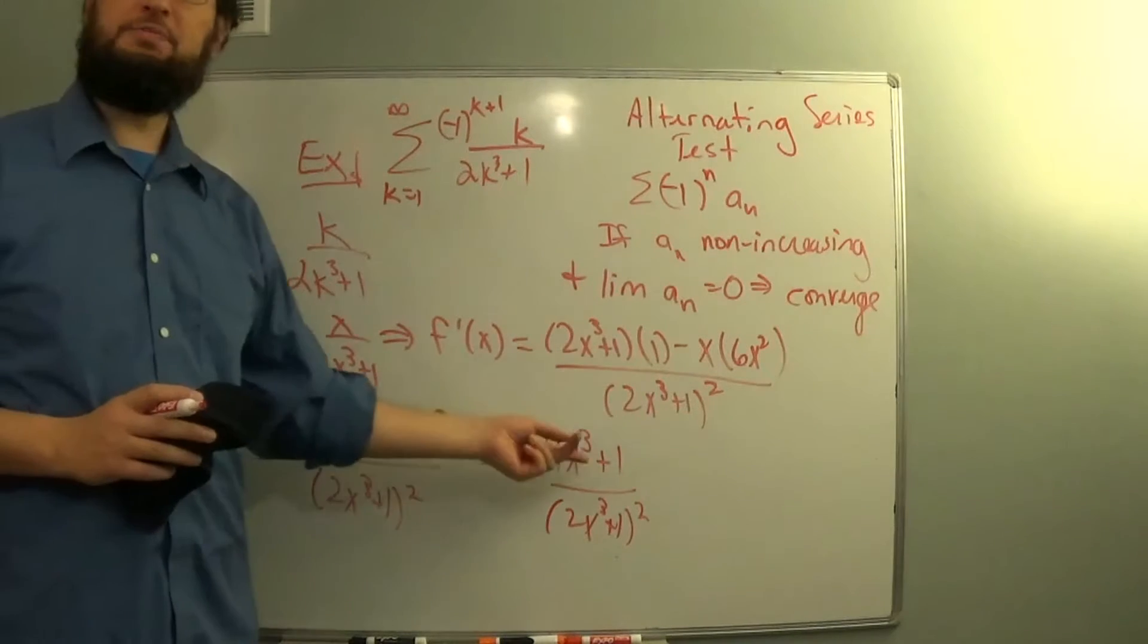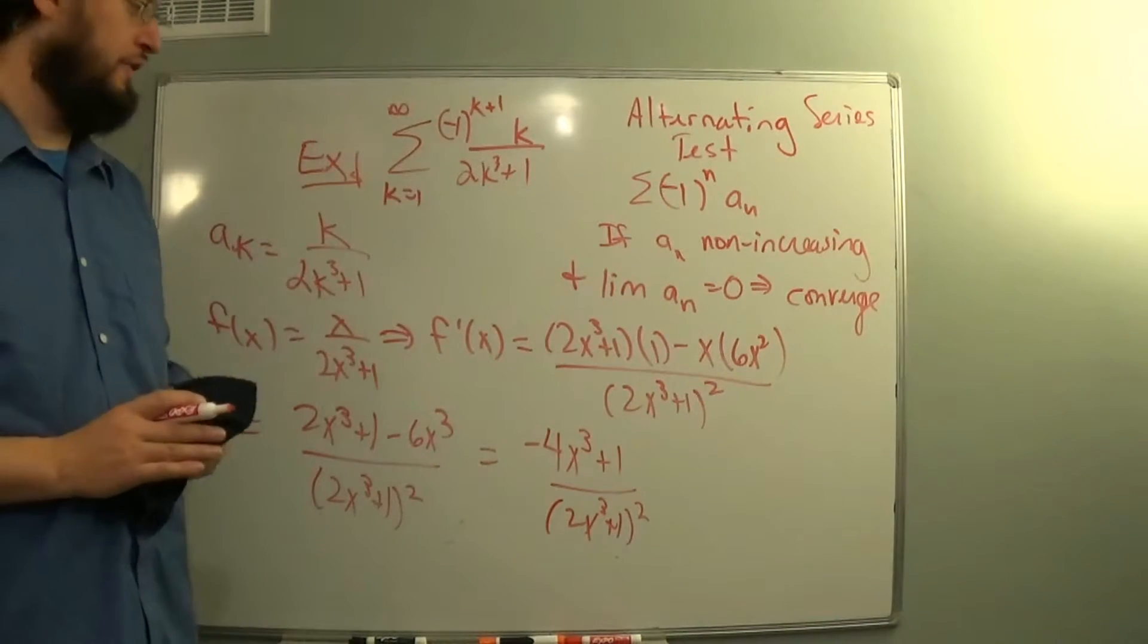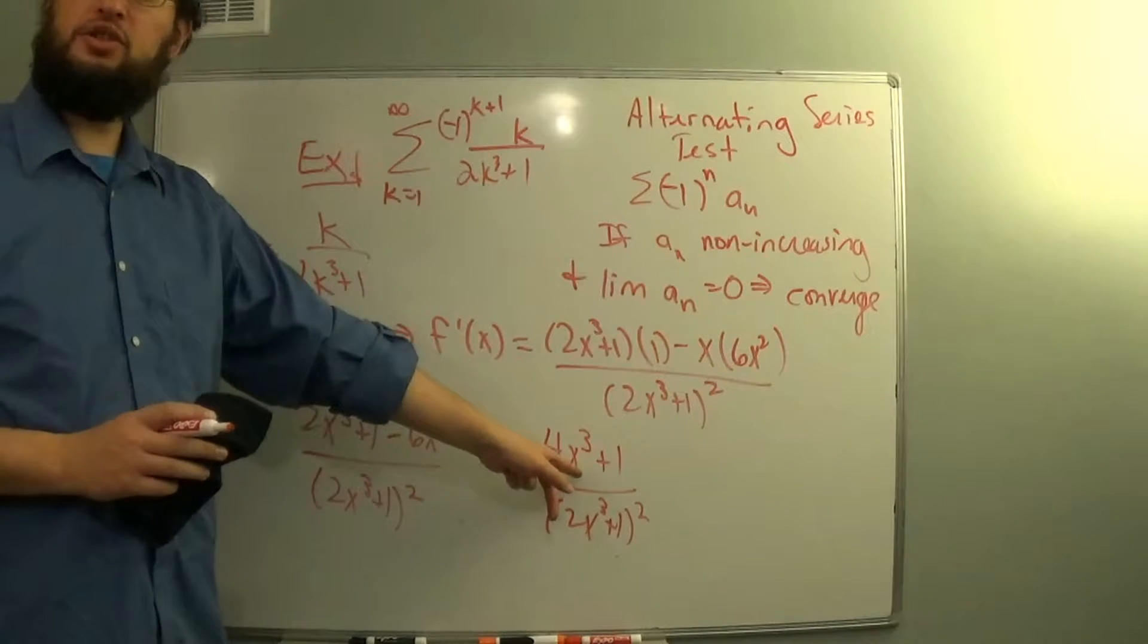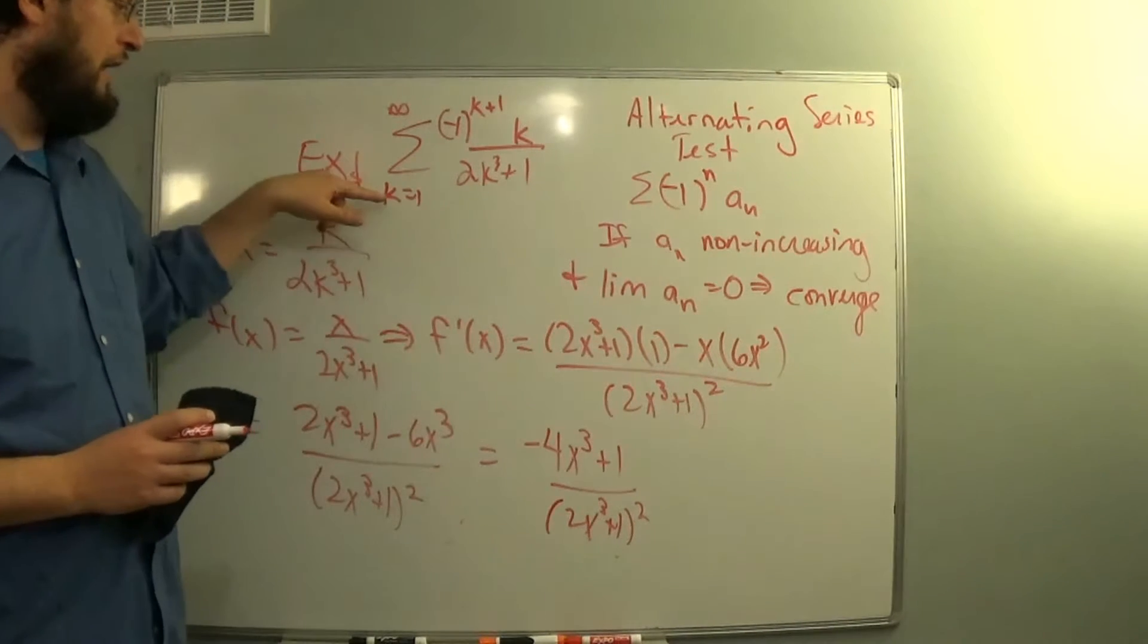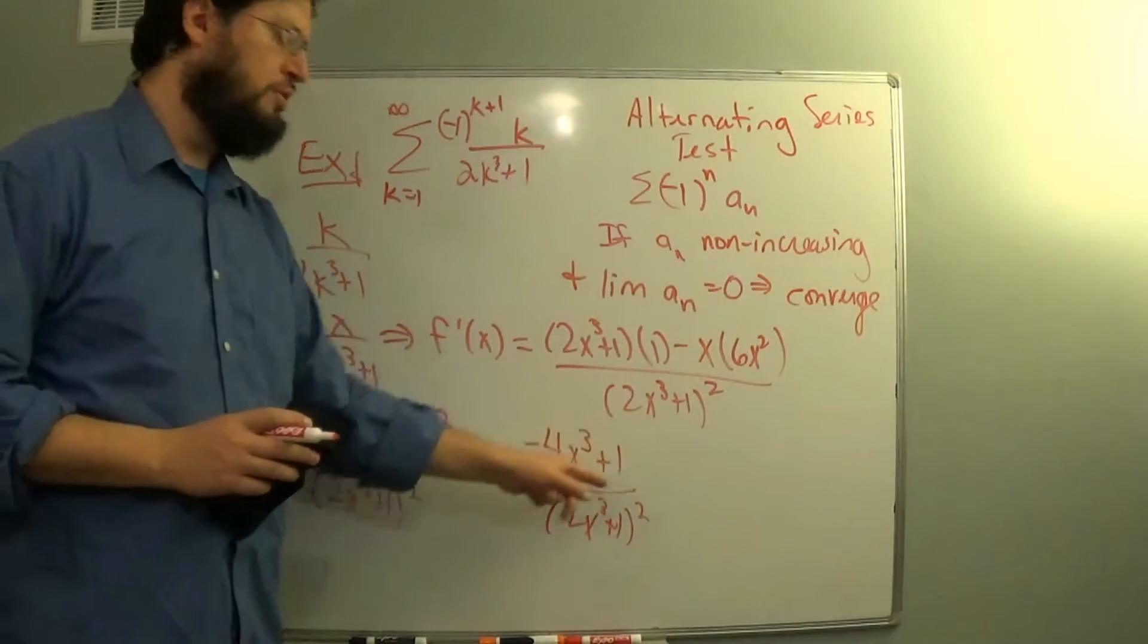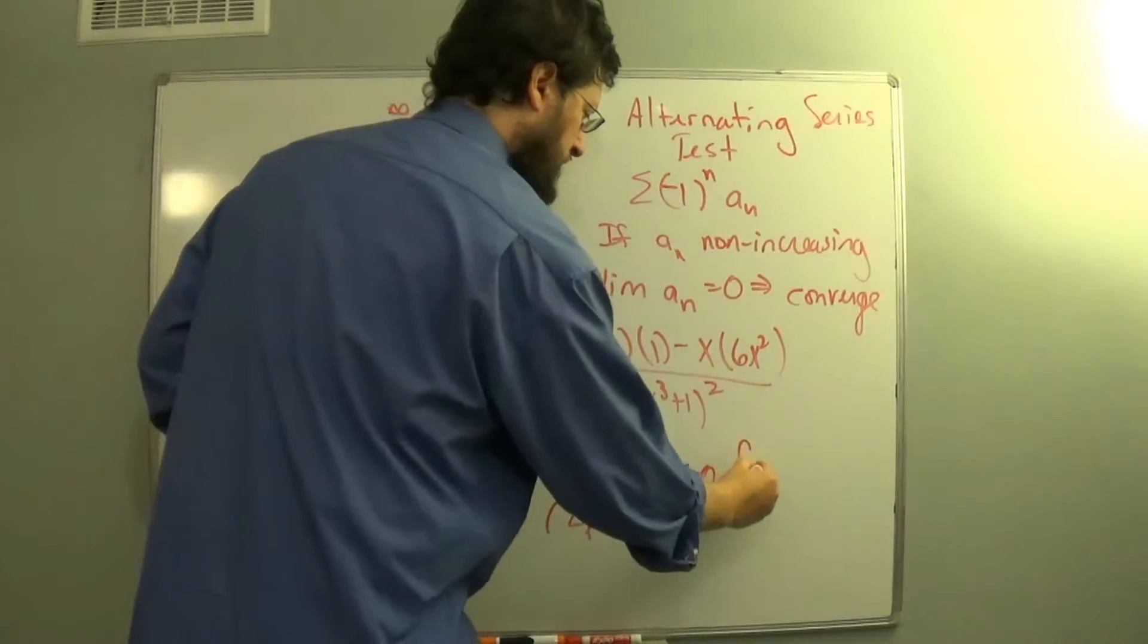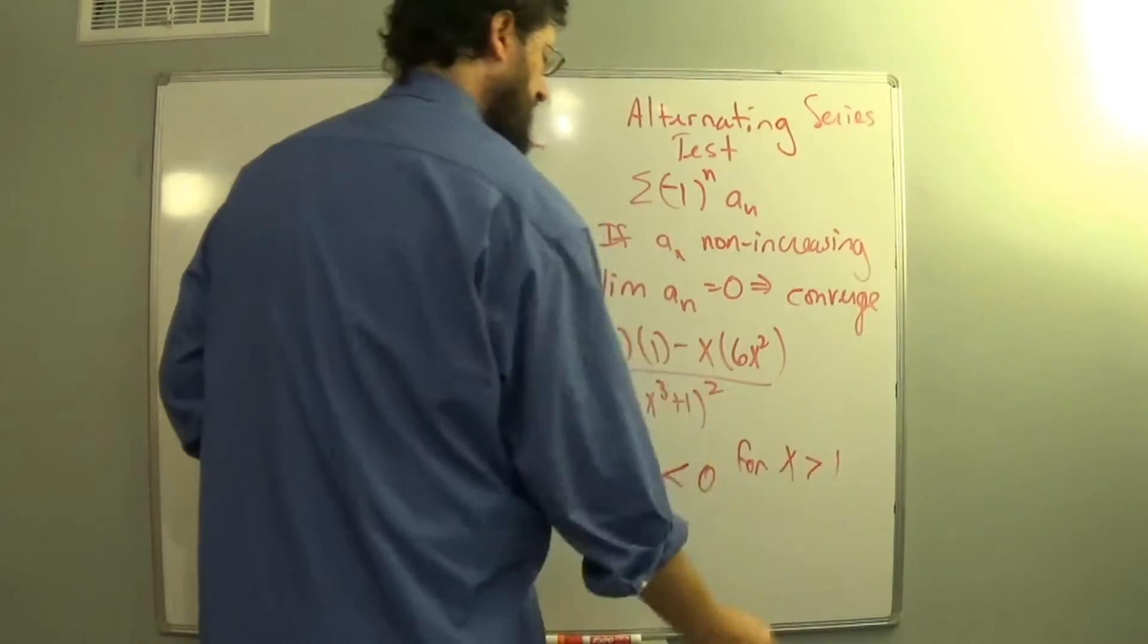So what happens? x is positive because it corresponds to k, and we're only looking at positive values of k. So if that's positive, x cubed is positive. And when k is bigger than 1, or even equal to 1, if x is even equal to 1 or more, this numerator will always be negative. This is always less than 0 for x bigger than or equal to 1.